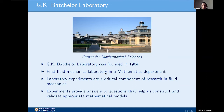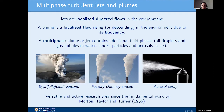Today we are going to talk about multiphase turbulent jets and plumes. Generally speaking, a jet is a localized directed flow in the environment, and we call it a plume if it rises or descends due to its buoyancy. We call it a multiphase flow if the plume or jet contains additional secondary phases — for example, oil droplets and gas bubbles in water, or smoke particles and gases in air. Typical examples include an ash cloud after a volcanic eruption, factory emissions polluting the environment, or even an aerosol spray in your bathroom.